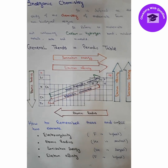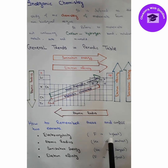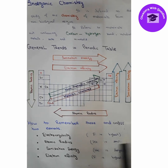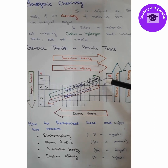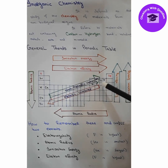First we will discuss the electronegativity trend. Electronegativity is the force to attract the shared pair of electrons toward itself. Among all the elements, fluorine has the highest electronegativity — it belongs to group 7A, the halogen family. So those elements that are close to fluorine have high electronegativity, while those that are far from fluorine have lower electronegativity.